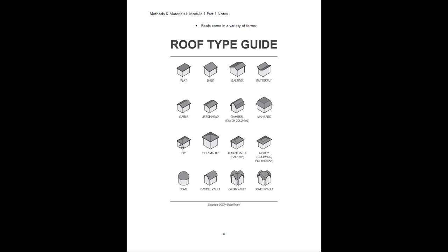Hip roofs are like a pyramid but not all four sides meet at a perfect point. A pyramid hip is where all sides do meet at a perfect point in the center. Then we have domes, which are common in classical architecture, along with barrel vaults — a semi-circular shape in one direction. A groin vault is basically two barrel vaults intersecting one another, and a domed vault is a combination of all three.